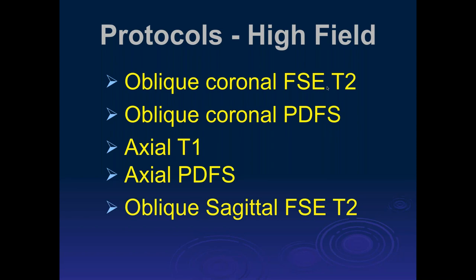We now do coronal imaging with a T2-weighted sequence and a proton density fat-suppressed sequence, then an axial T1, an axial PD fat sat, and an oblique sagittal T2. We do not fat sat the T2 images. A colleague also believes that too many fat-suppressed images decrease our ability to see anatomy and evaluate structures within the shoulder. Too much fat suppression from outside scans is a common problem — fat is a great contrast agent in the musculoskeletal system and shouldn't be saturated out too often.